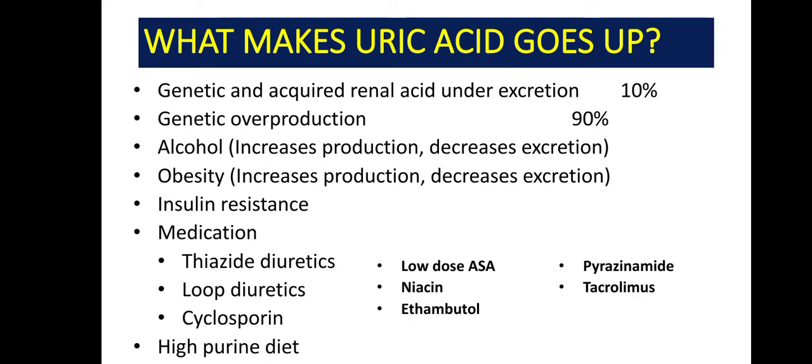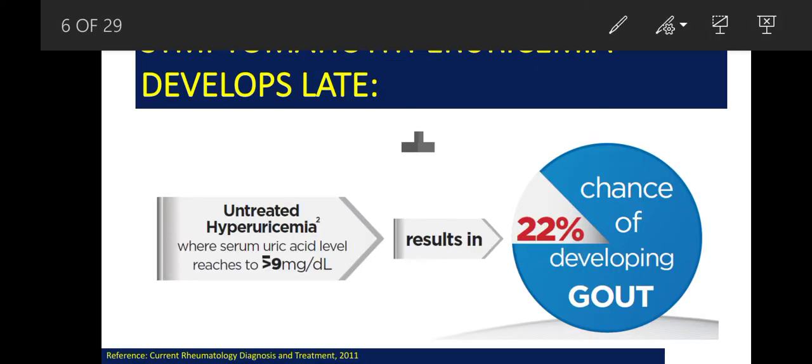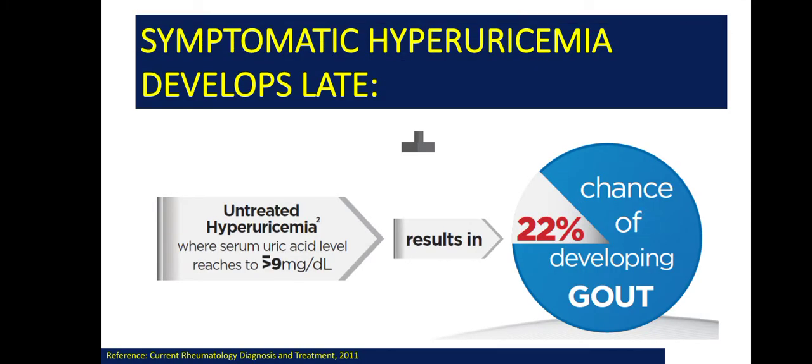A high-purine diet can also lead to hyperuricemia. Now, here is the physiology of uric acid production. Purines lead to intermediate compounds that are broken down into hypoxanthine, which is converted into xanthine in the presence of an enzyme called xanthine oxidase. That enzyme then converts xanthine into uric acid. This xanthine oxidase is the important enzyme that leads to uric acid formation.